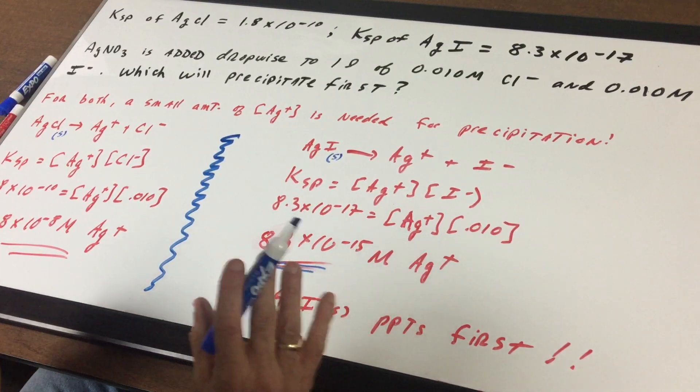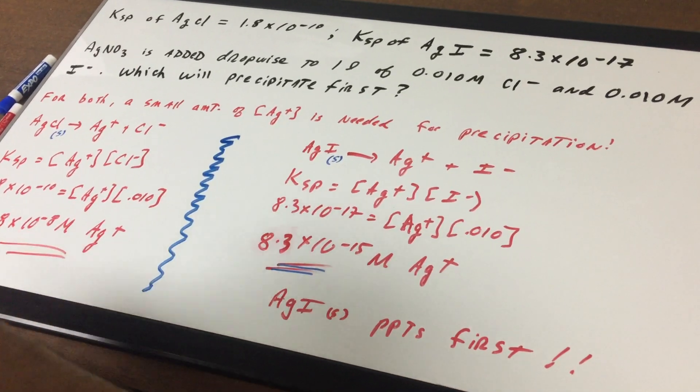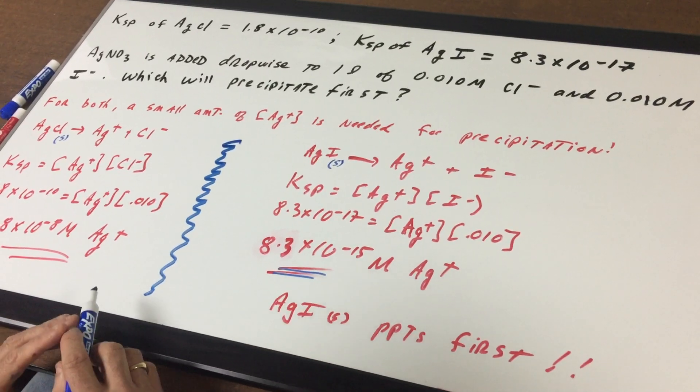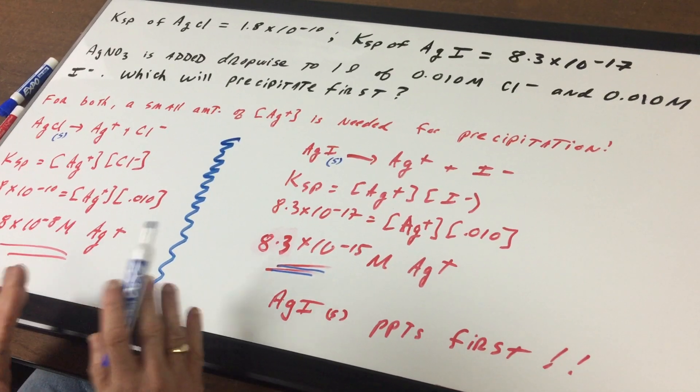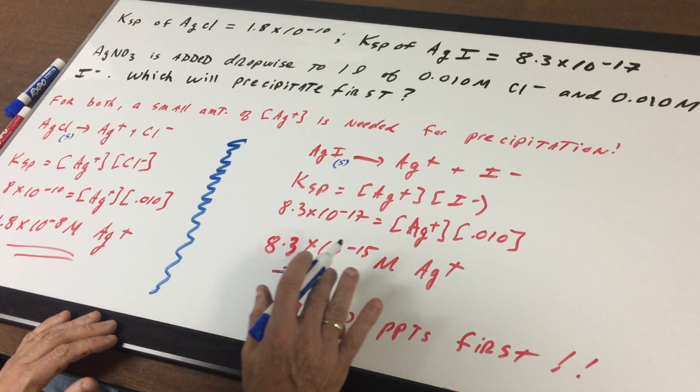I'm hoping you can see the silver is much, much smaller, so that means you only need a tiny, tiny amount of silver in order to cause precipitation. So when you get to 8.3 times 10^-15, when you exceed that small amount, you get your first precipitate.